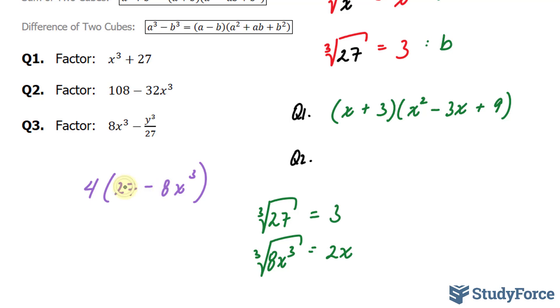And because of that, and because they're both being subtracted, I will use this template. So I'll assign the 2x as my b, and the 3 as my a. Notice that the b is the one that gets the negative. So let's go ahead and substitute everything into this template.